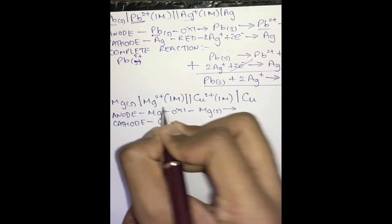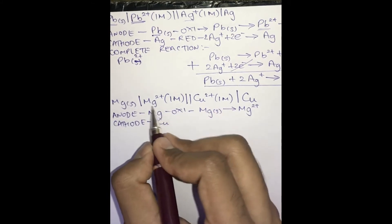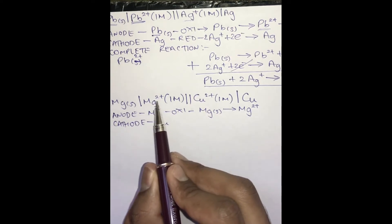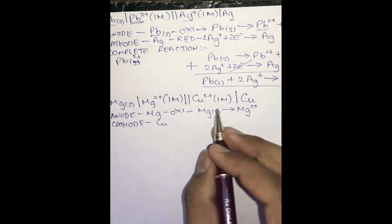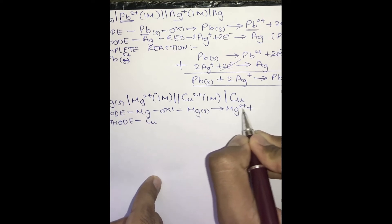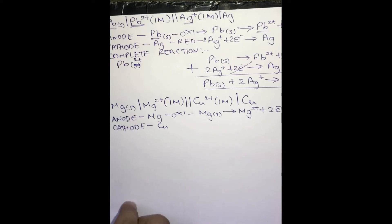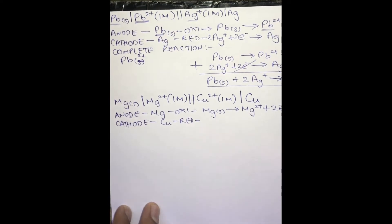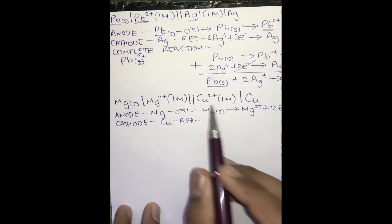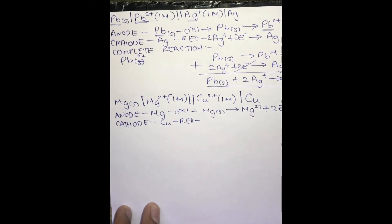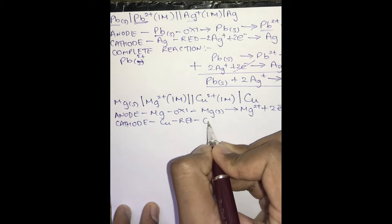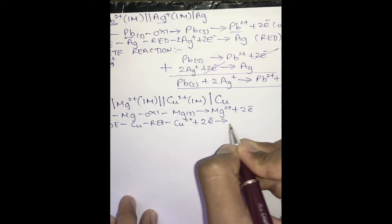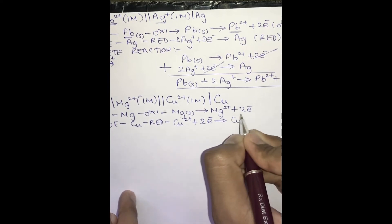At the anode, oxidation takes place — that is loss of electrons. Mg will get dissociated into Mg²⁺ ions as mentioned in the cell representation. It cannot dissociate into Mg³⁺ or Mg⁺; we must use the ions shown in the question. So Mg → Mg²⁺ + 2e⁻. At the cathode, reduction takes place — that is gain of electrons. Cu²⁺ will gain two electrons and become Cu.